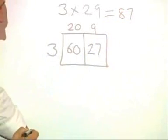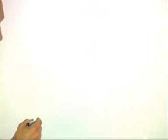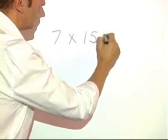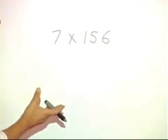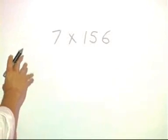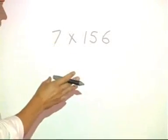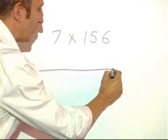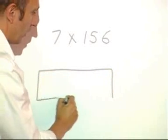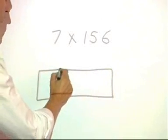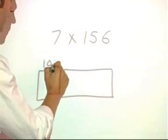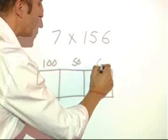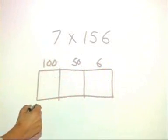The method can then be adapted to slightly larger calculations. For example, 7 times 156. This would be quite hard to do mentally. And certainly, we would encourage children to have an estimation, a sense of how large the answer will be. But once they've done that, to find the actual calculation, I can then split it into 100 and 50 and 6. And then multiply each part by 7.